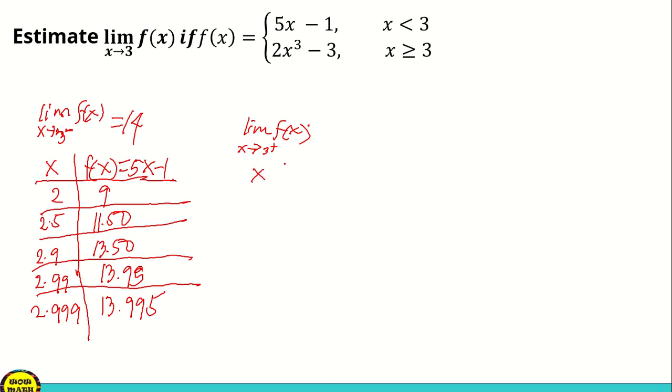So again, construct a table of values. 4, 3.5, 3.1, 3.01 or 3.001.